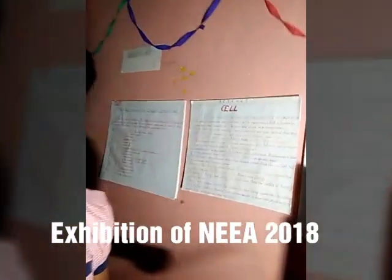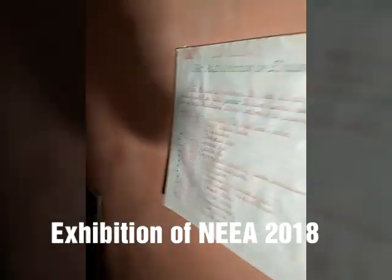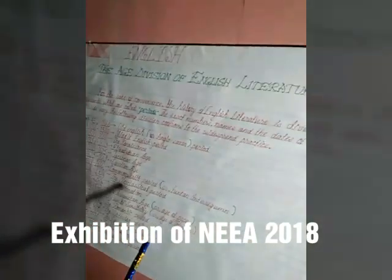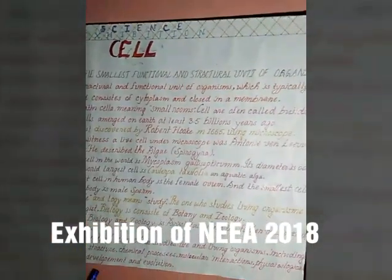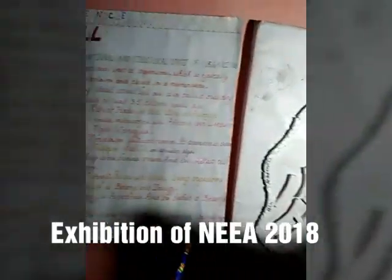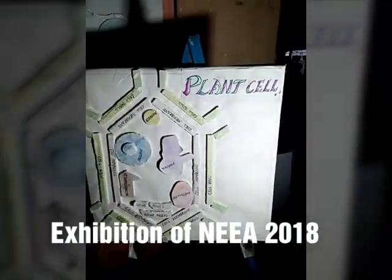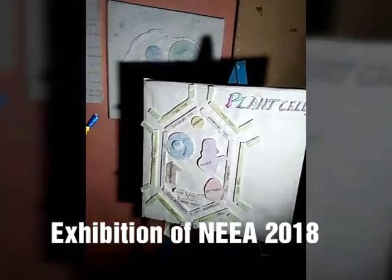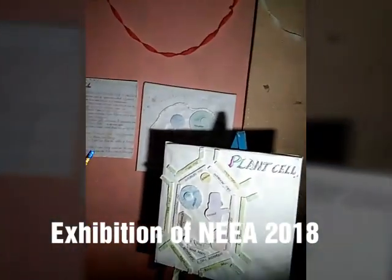The teacher compliments the display, noting it is written in English by the English literature division. The student confirms the project is about cells — showing both an animal cell and a plant cell. The teacher thanks the student, saying they have done very well, and moves on to the next presenter.